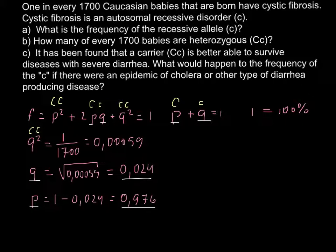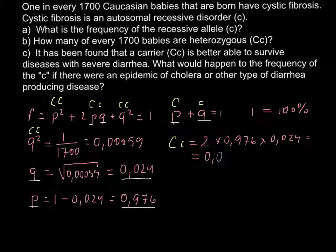We have all we need to solve the middle part of the formula and find the frequency of the heterozygous condition, capital C small c. This equals 2 multiplied by p, which is 0.976, multiplied by q, which is 0.024. The answer is 0.047. We can also give this answer as a percentage. Since 1 equals 100%, we multiply by 100.